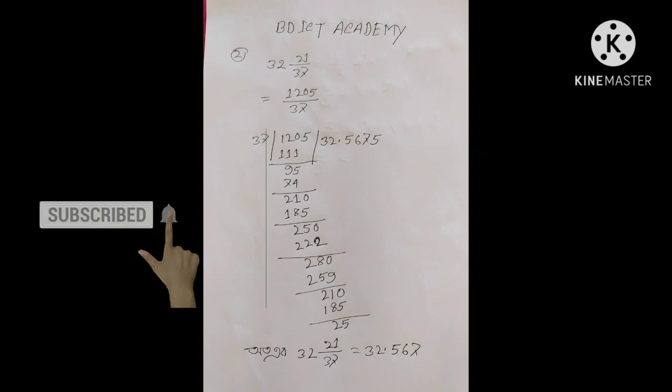હસીવળી, બહીએ, બહાગ — ગાલી ગાલે, આશાર, 3 ઉત્તર. પઈરેવે વેડોઈ.